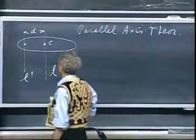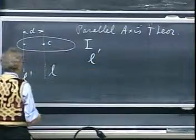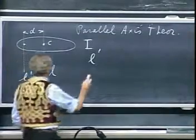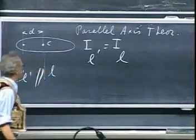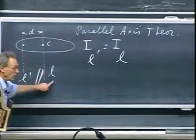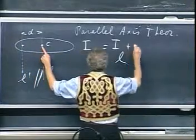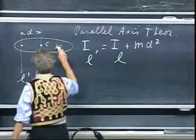And that says that the moment of inertia of rotation about L prime, provided that L prime is parallel to L, is the moment of inertia when the object rotates about an axis L through the center of mass plus the mass of the disk times the distance d squared. So this is the mass.